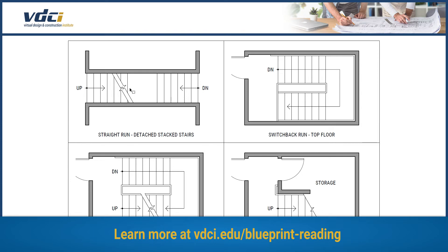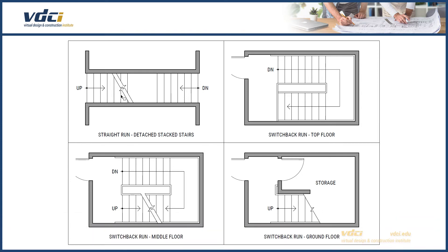When stairs go up, they will end in a break line. This break line represents the section cut of the floor plan. In this case we have a double break line. The first break line represents the section cut for the stairs that go up, and the second break line tells us that these stairs are running down.